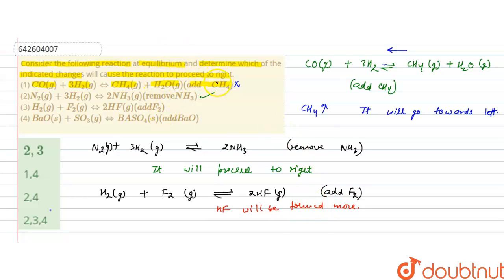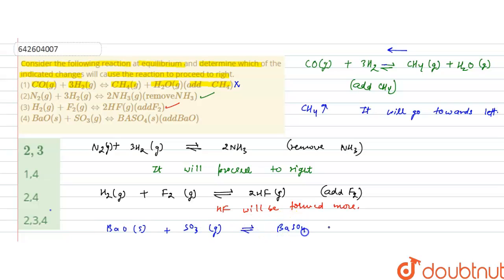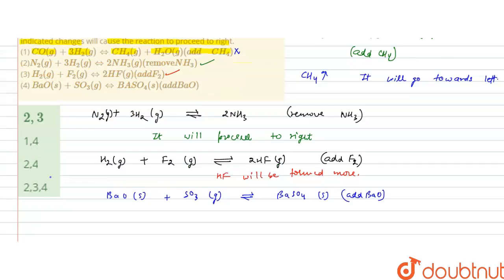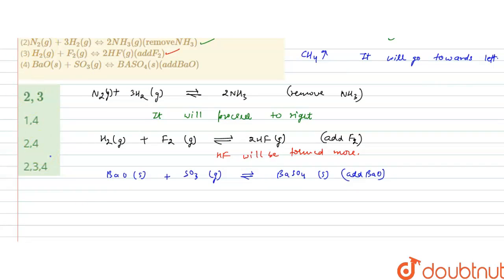This change will also cause the reaction to proceed to right, so this is also a correct option. The last option is barium oxide in solid state plus SO₃ in gaseous state forms barium sulfate solid. The indicated condition is to add barium oxide.